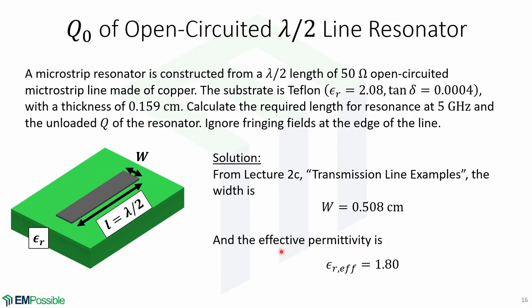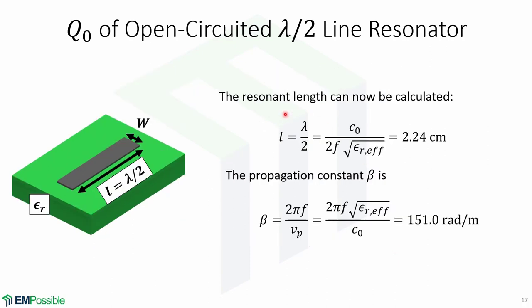We also obtain the effective permittivity of 1.80 from the same previous lecture. With these parameters, the resonant length can be calculated. We know L equals lambda over 2 at resonance, so this equals c0 over 2f times the square root of the effective permittivity, giving 2.24 centimeters. The propagation constant beta equals 2*pi*f over the phase velocity, yielding 151 radians per meter.